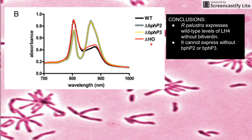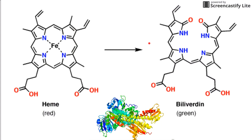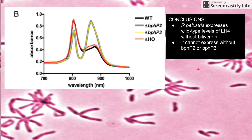This is kind of proving the obvious that if we don't have these phytochromes, we don't have LH4, which is what we already knew. But it's interesting to note that if we don't have this HO — which is basically the oxygenase that makes biliverdin — we still have the normal phenotype. So in a way, if we don't have biliverdin, we still have the same phenotype as wild type, which is the beginning point of this paper.